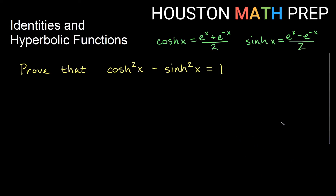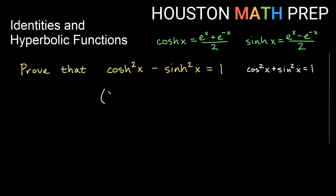Now let's prove another identity: cosh²(x) - sinh²(x) = 1. This looks similar to the Pythagorean identity from circular trig, where cos²(x) + sin²(x) = 1, but notice the minus here. It resembles x² - y² = 1, which is what hyperbolic functions are based on, as mentioned in our intro video. We'll plug in exponential definitions: cosh²(x) is ((e^x + e^(-x))/2)² and sinh²(x) is ((e^x - e^(-x))/2)².